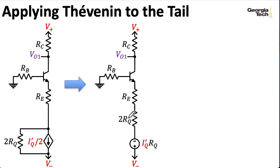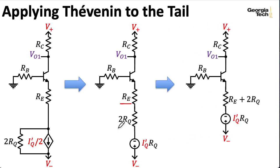Now, I need to include the Thevenin resistance, and to get the Thevenin resistance, I get rid of the sources. So I open up that, and I turn V minus into ground, and I just see a resistance of 2RQ. And then I just have RE in series with 2RQ giving me this.